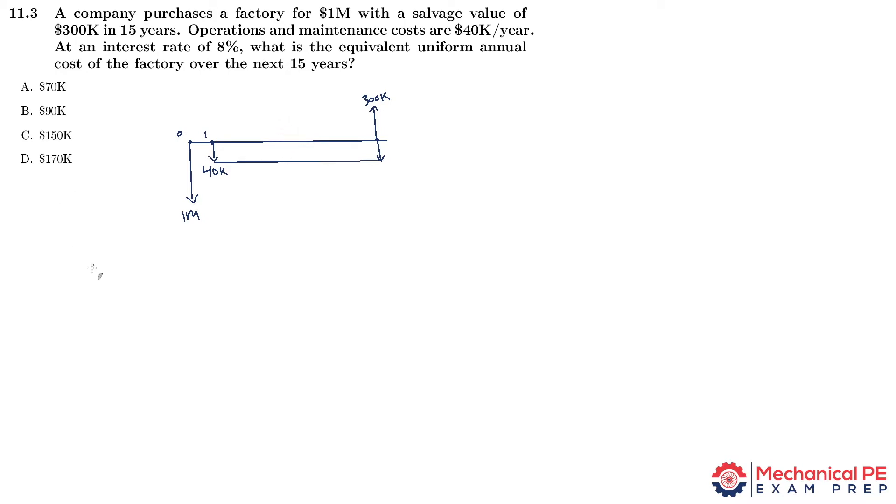We can write an expression for the equivalent uniform annual cost, EUAC. I'm going to treat the costs as positive and the positive cash flows as negative because we're calculating a cost and I want the answer to come out as a positive number since the answer choices are positive. You don't have to do that. You could treat the salvage value as positive and have these be negative, then take the opposite of your answer.